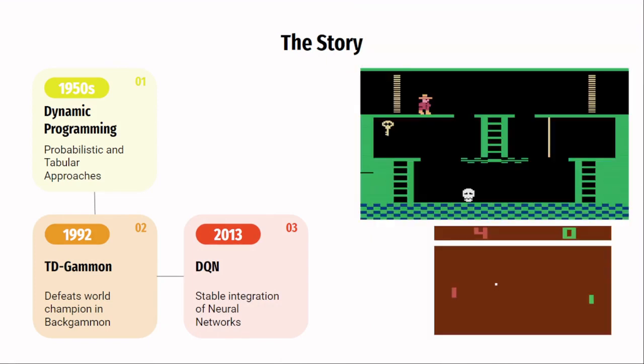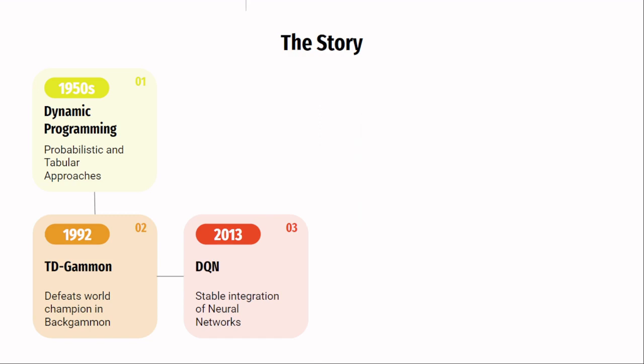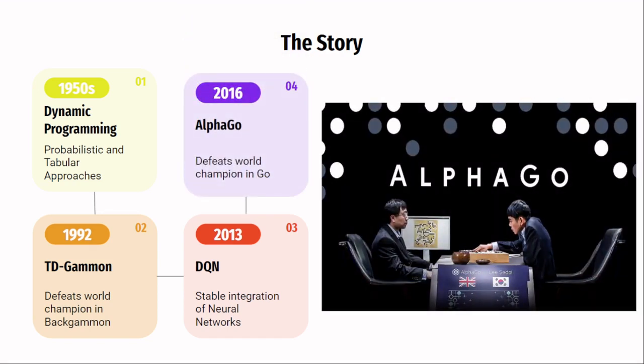DeepMind, a company owned by Google, came up with its DQN algorithm which outplayed every algorithm in existence in several Atari 2600 games. In 2016, DeepMind's AlphaGo system beat the world champion Lee Sedol in the game of GO.